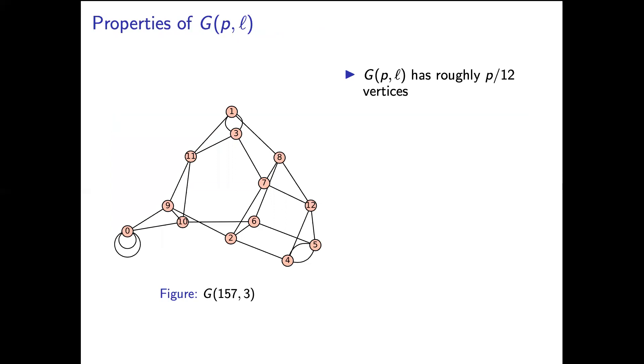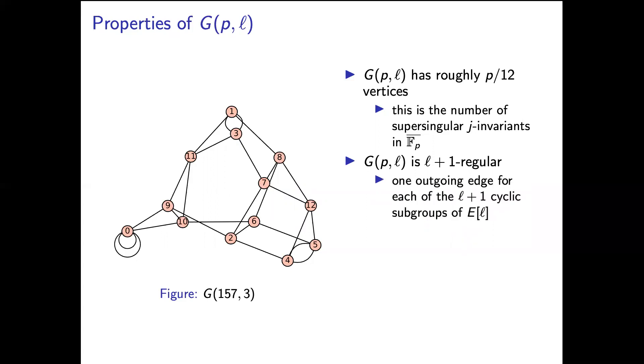So here's the 3-isogeny graph in characteristic 157. So this graph G(p,ℓ) is always finite. This is because there are about p many supersingular j-invariants in F̄_p. They're actually all in F_{p^2}. It's an (ℓ+1)-regular graph meaning the out-degree of every vertex is ℓ+1. And this is because there's one outgoing edge for each of the ℓ+1 cyclic subgroups of order ℓ.